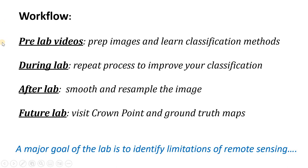Here's how the workflow is going to go. In the pre-lab videos you're going to prepare the images and learn how to do the classification methods, and we're actually going to be using ArcGIS Pro instead of QGIS. During lab you're going to be repeating this process to improve the quality of your classified image, trying different things to see who can make the most accurate image. After lab we'll be smoothing and resampling the image, and then during a future lab session we'll be visiting Crown Point and ground truthing our maps to assess their accuracy.